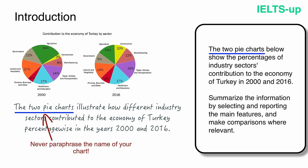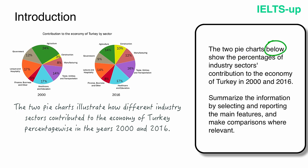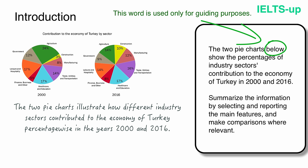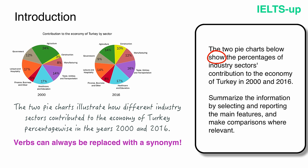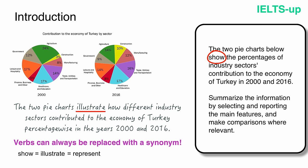After that comes the word 'below,' which is used only for guiding purposes. Since the examiner won't see a chart below your writing, you can just skip it. Next, we have the verb 'show' — verbs can always be replaced with a synonym. I decided to replace 'show' with 'illustrate,' but this is not the only option. We could also use synonyms such as 'represent,' 'describe,' or 'provide information about.'